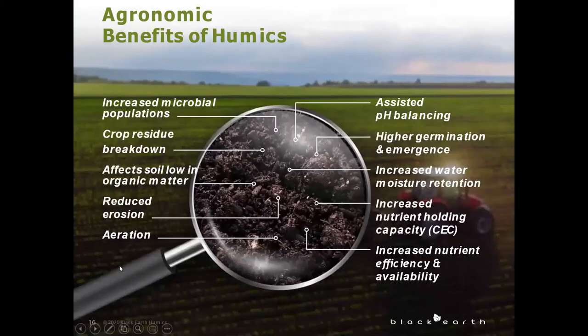Let's go over some of the agronomic benefits that humic acids bring. Humic acids boost microbial activity. The carbon in the humic feeds the microbial activity in the soil, which is important for breakdown of pesticides and pollutants, nutrient cycling, disease suppression, and water movement. By stimulating the soil's microorganisms, it causes more efficient crop residue breakdown.